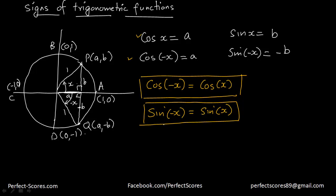The value of a — the x-coordinate — goes from a maximum of 1 to a minimum of negative 1. Similarly, the value of b goes from a maximum of 1 to a minimum of negative 1. Since these are the ranges of a and b, the same ranges apply to cosine x and sine x.